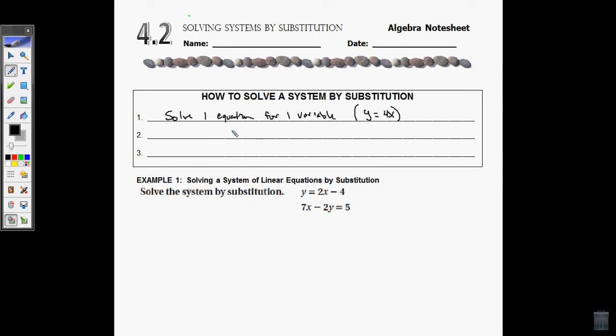So you have one variable by itself and it equals something else, regardless if that something else is messy or a single number. Once you have that, the second thing to do is to substitute your new expression into the second equation. Then solve for one variable.